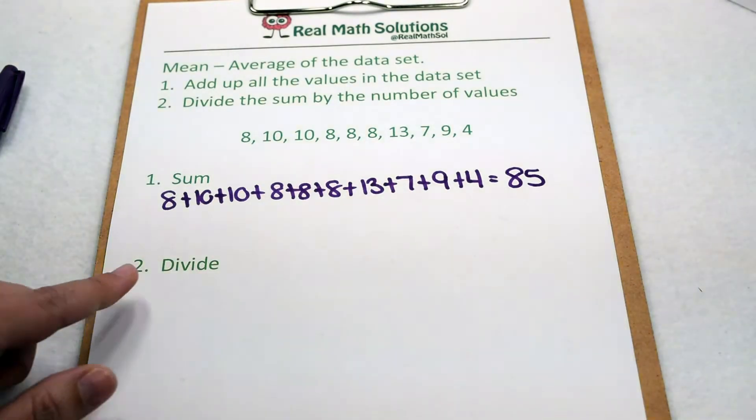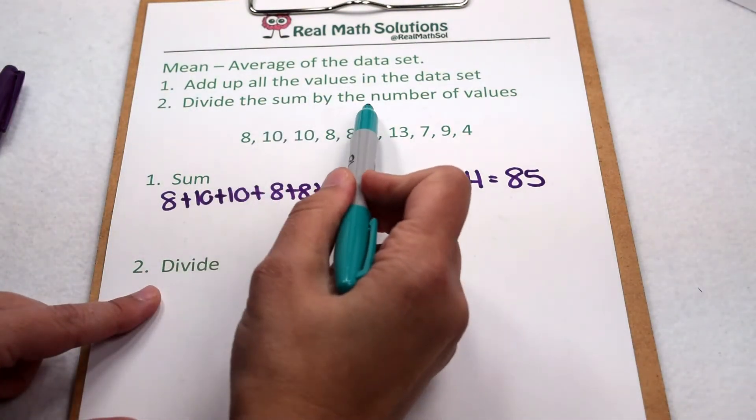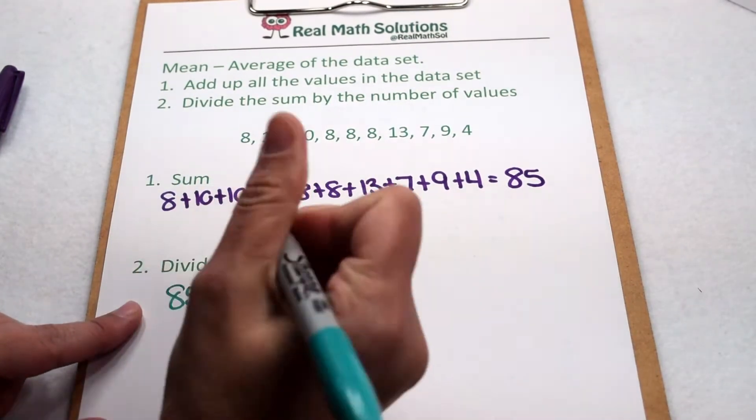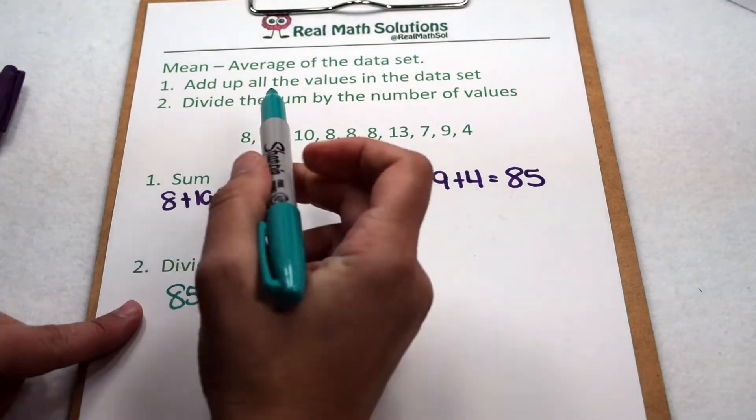So now to find their average shoe size, we need to divide the sum by the number of values. That means we need to take our sum of 85 and divide it by the total number of people surveyed.